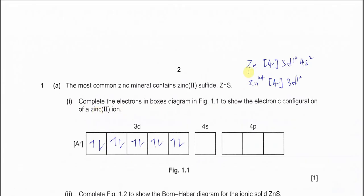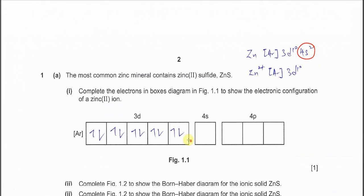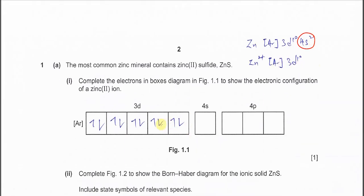The electron configuration for zinc is argon 3d¹⁰ 4s². Zinc 2+ ion has removed 2 electrons from the 4s, so now becomes argon 3d¹⁰. In this orbital diagram, you have to fill up the 3d subshell. The 3d subshell has 5 orbitals, so each orbital needs to be filled with 2 electrons with different spin. So here is 3d¹⁰, ten electrons in there, fully filled.